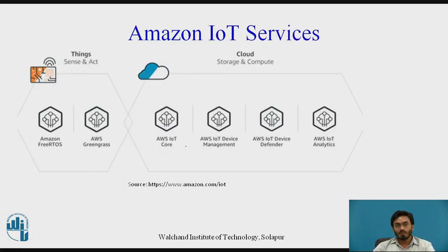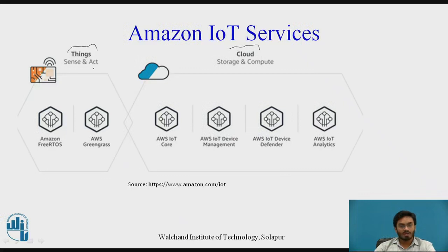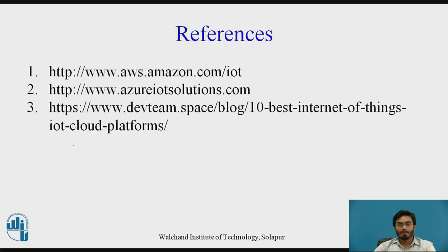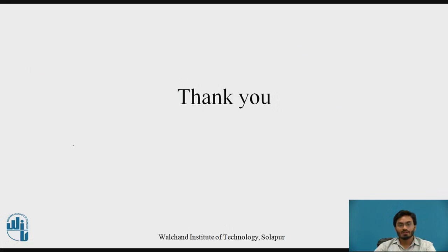As a small overview, Amazon IoT service has two main sections: Things and Cloud. The Things section supports Amazon Greengrass and Amazon FreeRTOS. We will go into more detail about these services and discuss the basic costing structure in our upcoming video. Here are the references used for this session — thank you.